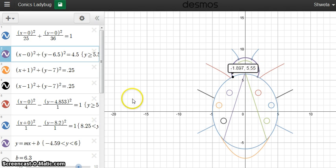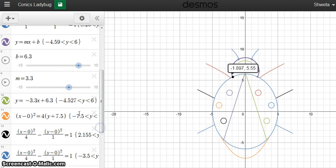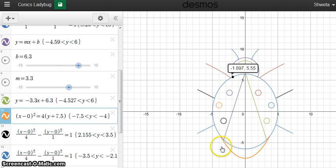Another conic I incorporated was my ladybug's little tail wing, which is a parabola. Using the standard equation, I varied the value of p and decided that the value of 1 (because this is 4p) looks the best because it fits well around my ellipse.